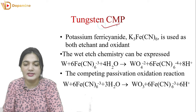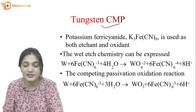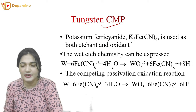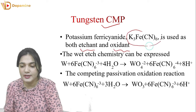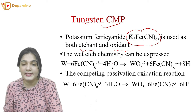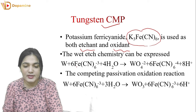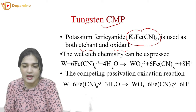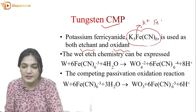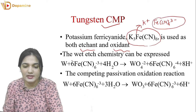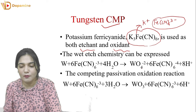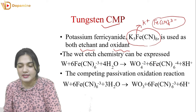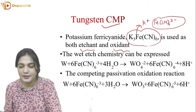We are going to discuss the tungsten CMP in detail — the whole mechanical process and chemical reactions. Here, we use potassium ferricyanide, K3Fe(CN)6, as an oxidant and etchant. Looking at the wet etch chemistry: tungsten reacts with K3Fe(CN)6, which creates K⁺ ions and Fe(CN)6³⁻ ions. The Fe(CN)6³⁻ ion then reacts with tungsten and H₂O to create tungsten oxide WO₄²⁻, along with 6 Fe(CN)6⁴⁻ ions and 8 hydrogen ions.